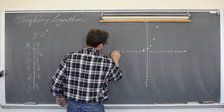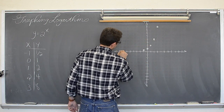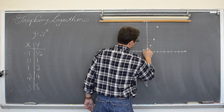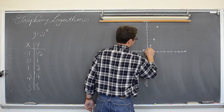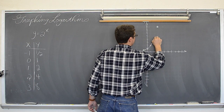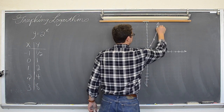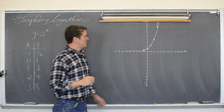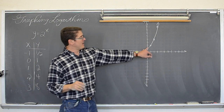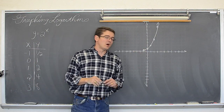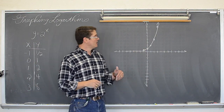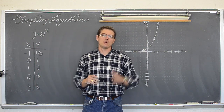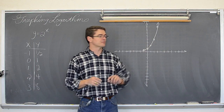We talked about how exponential growth curves, or decay if they are in basic form y equals a to the x, have a horizontal asymptote of y equals zero. They all pass through the point zero, one. And because my base is larger than one, it is growth.